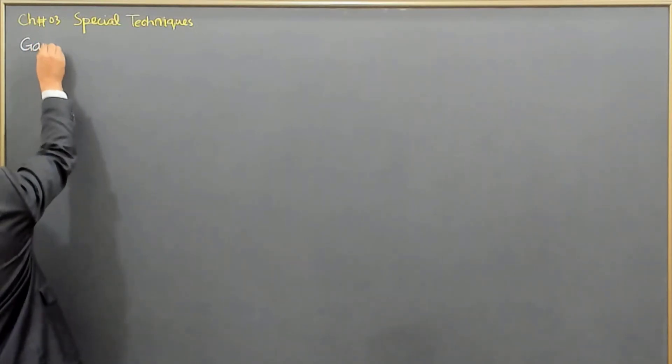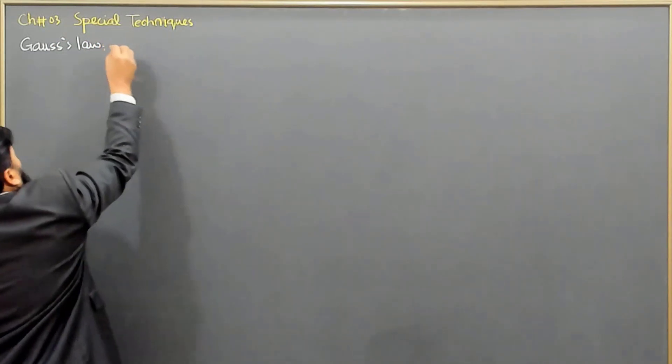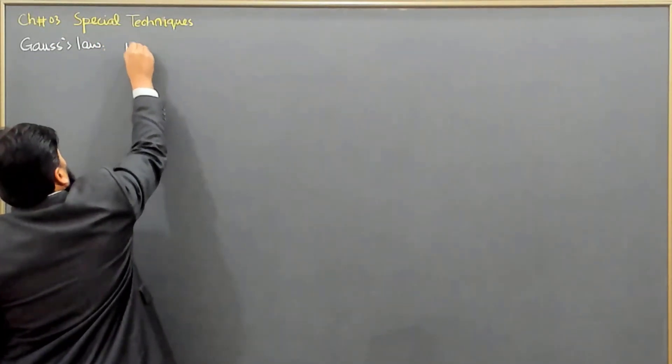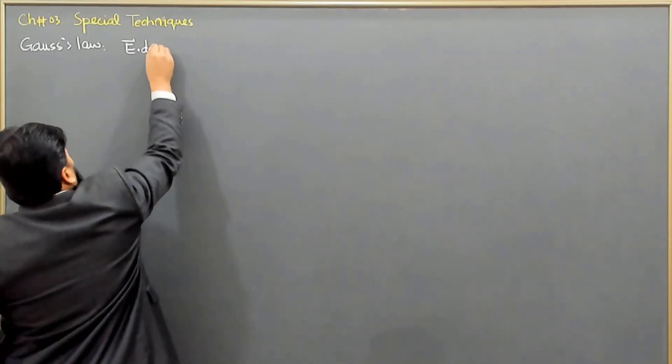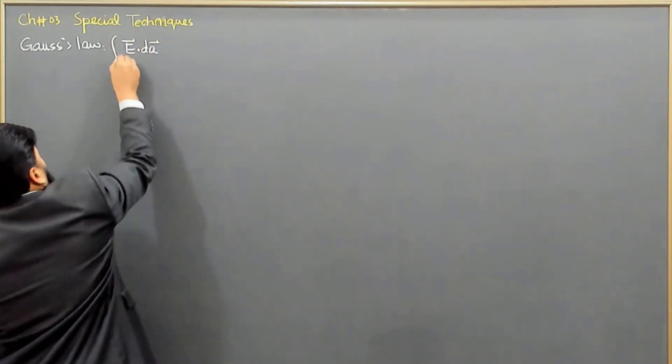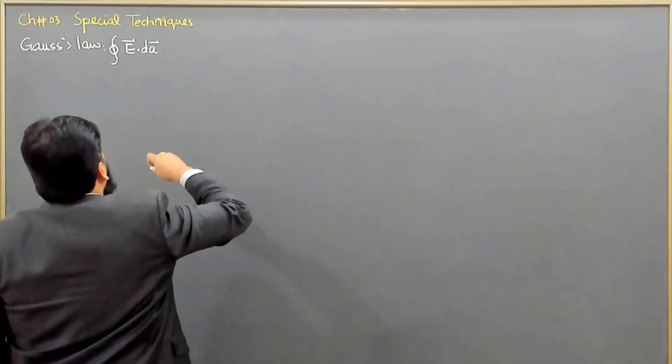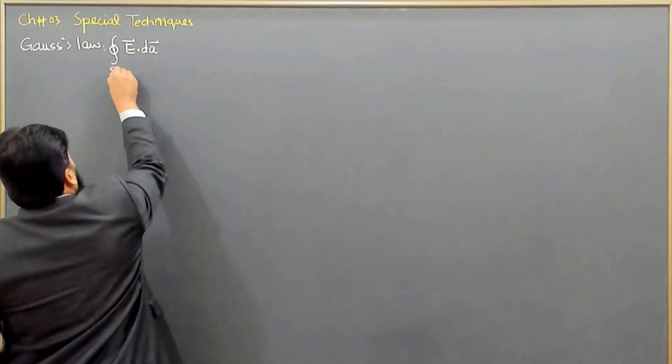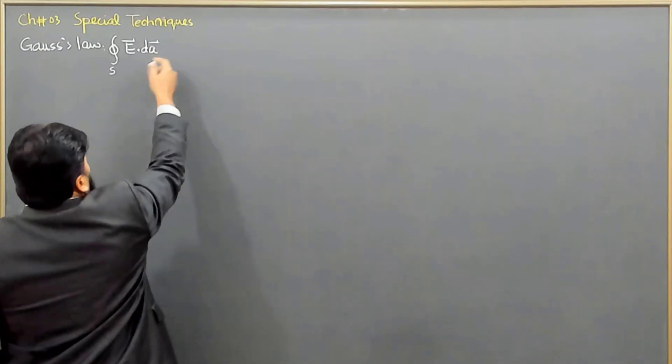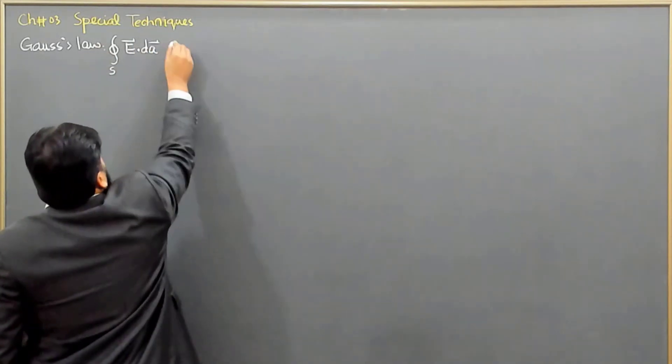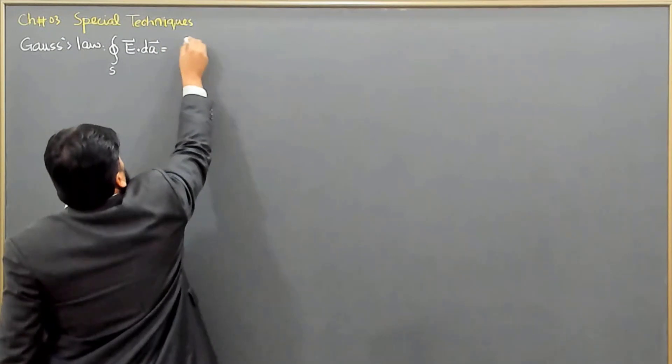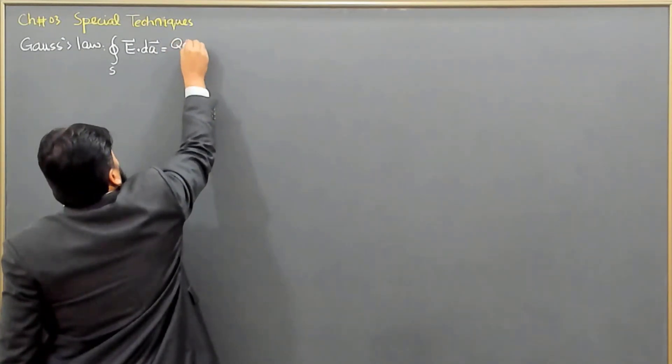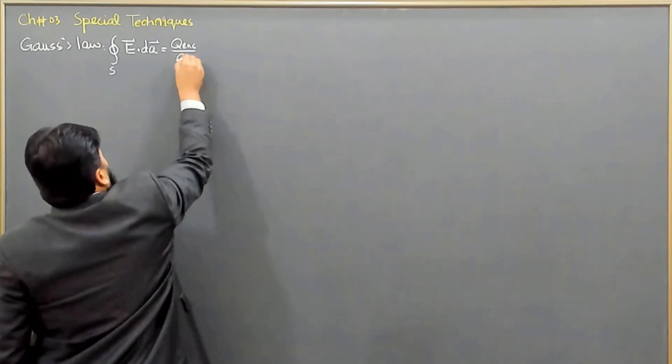let me start with Gauss's law. And Gauss's law is, you remember, that the Gauss's law is E dot dA, and it was an integral on a closed surface. So, it's a surface integral. This is basically the electric flux, phi E,